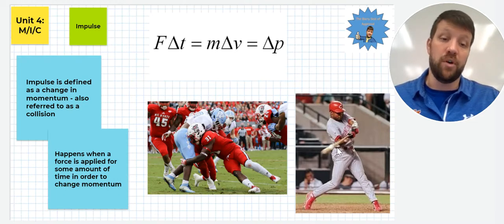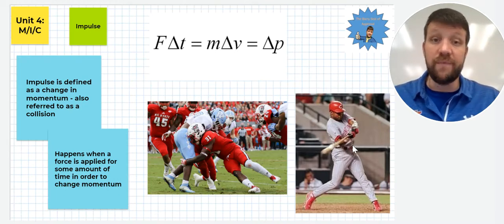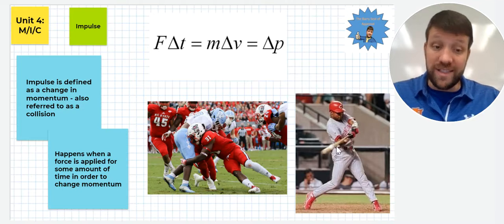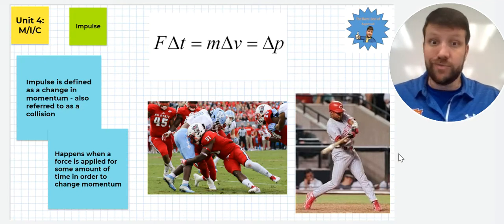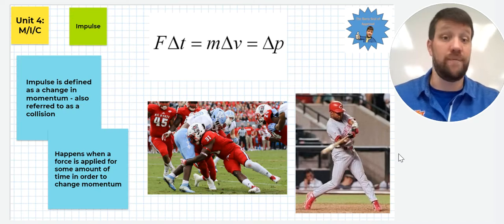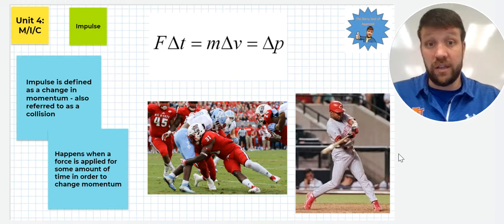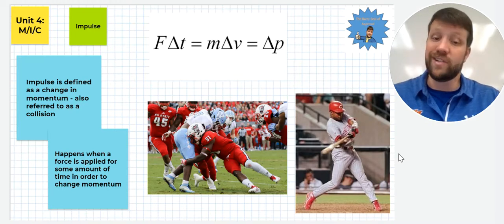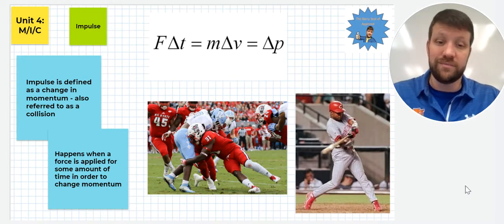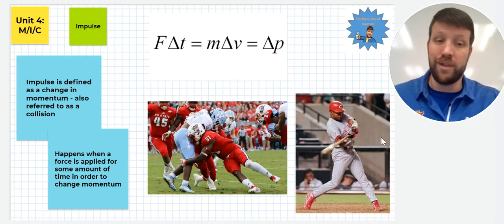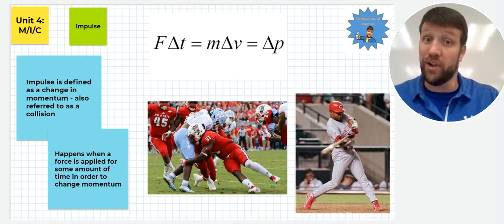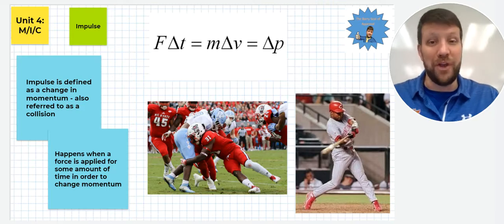Same type thing when you have a baseball. A baseball moving to the left in the negative X direction, once it's hit by a baseball bat, is going to certainly have a force applied for a very small amount of time and thus have a very drastic change in velocity. That's going to be a very large impulse in that case. I've got my NC State football player tackling the UNC football player and my favorite baseball player growing up, Barry Larkin from the Cincinnati Reds. Sorry for the bias there.